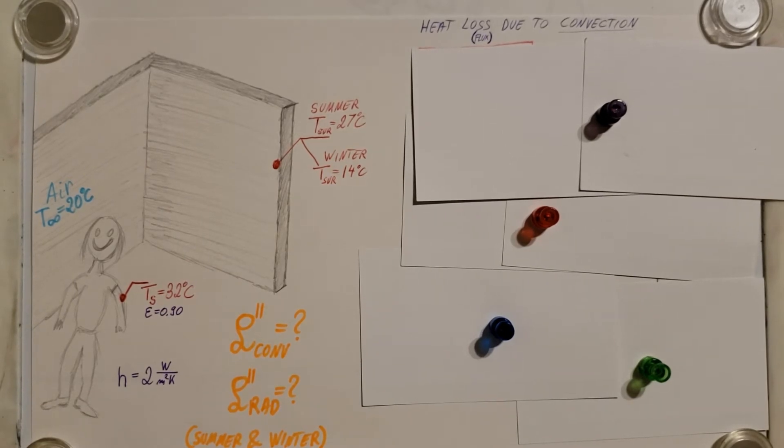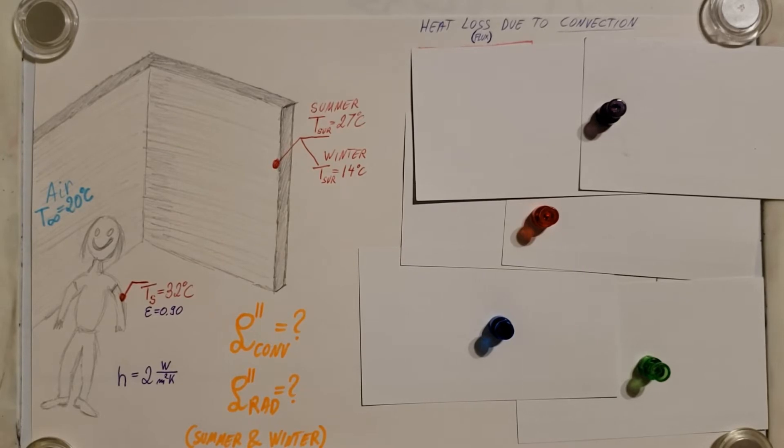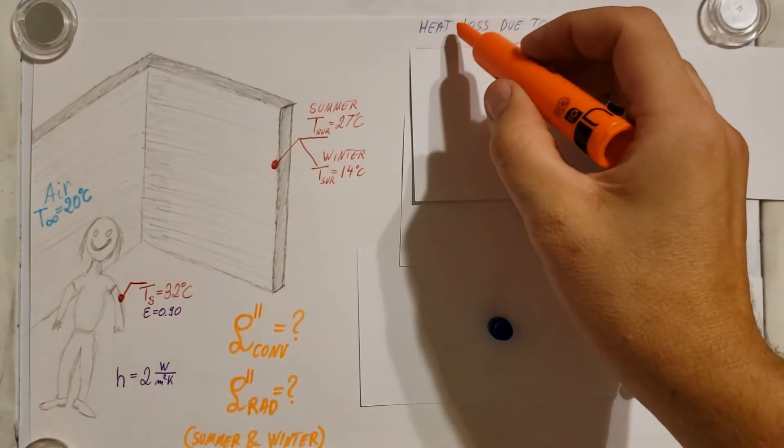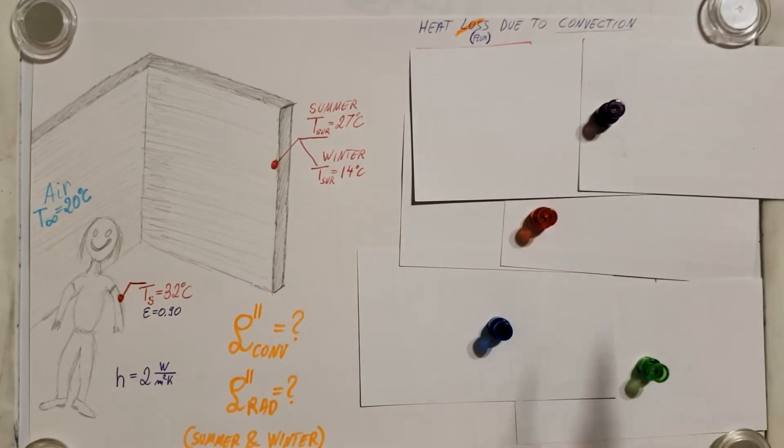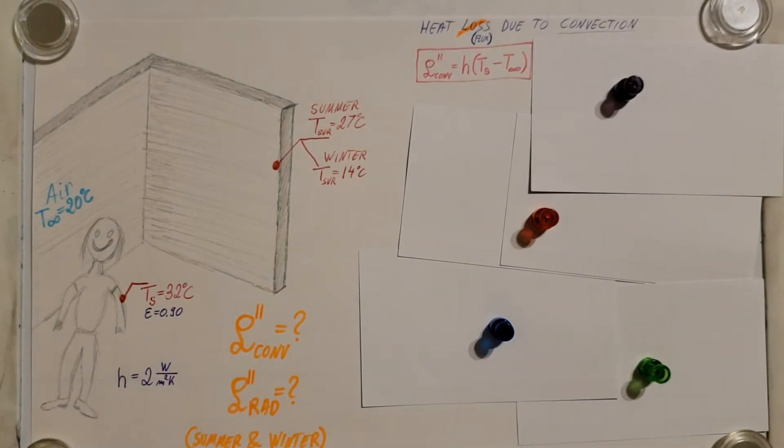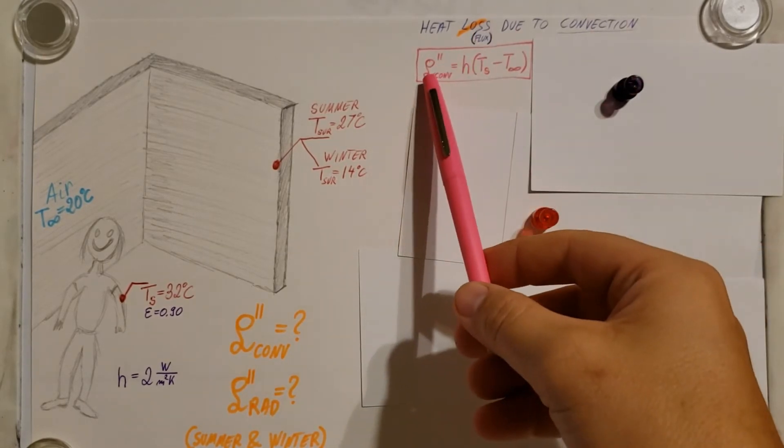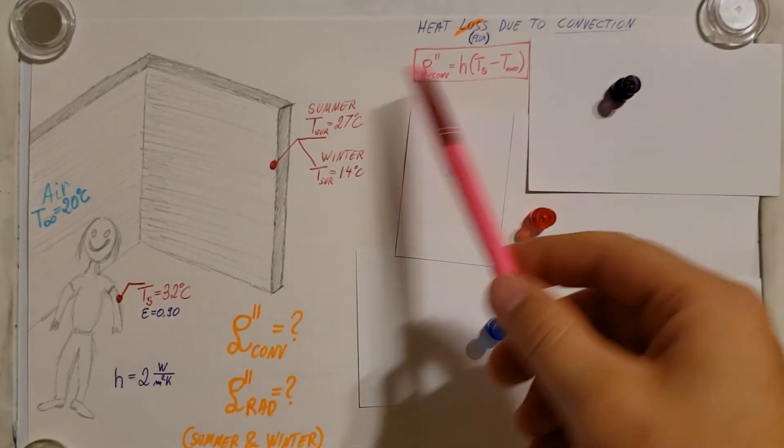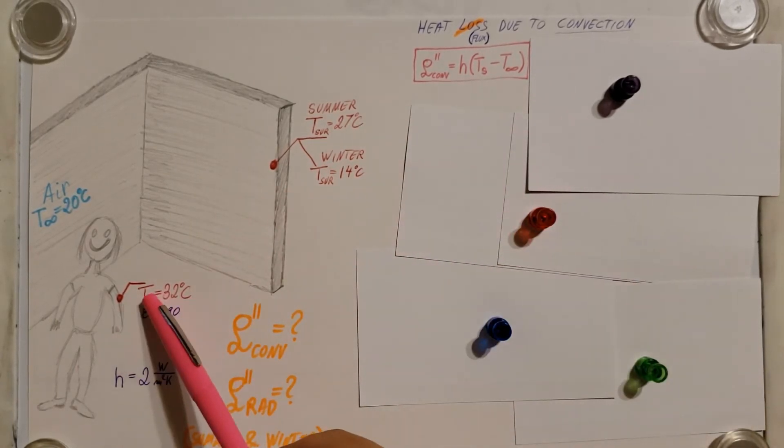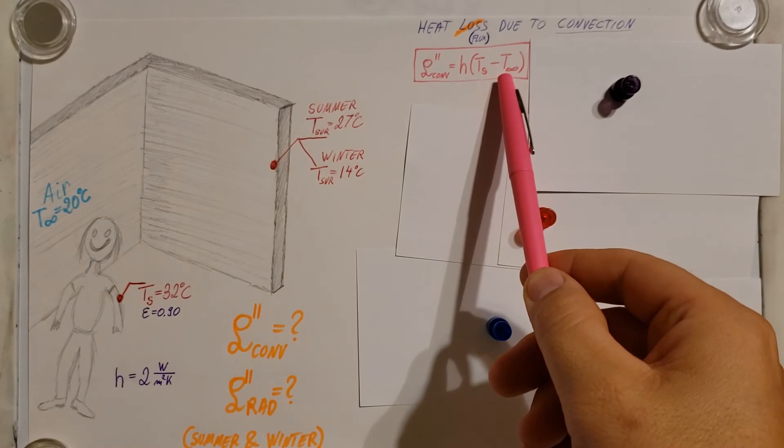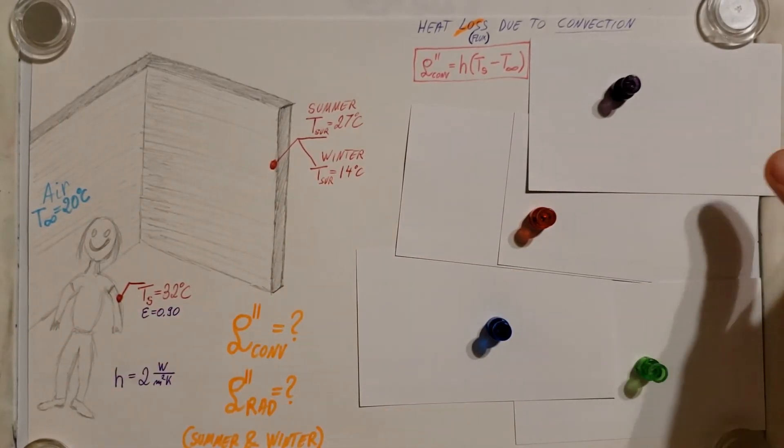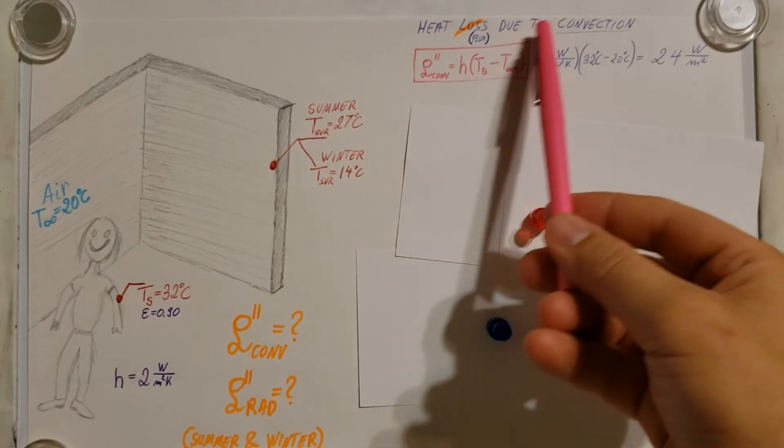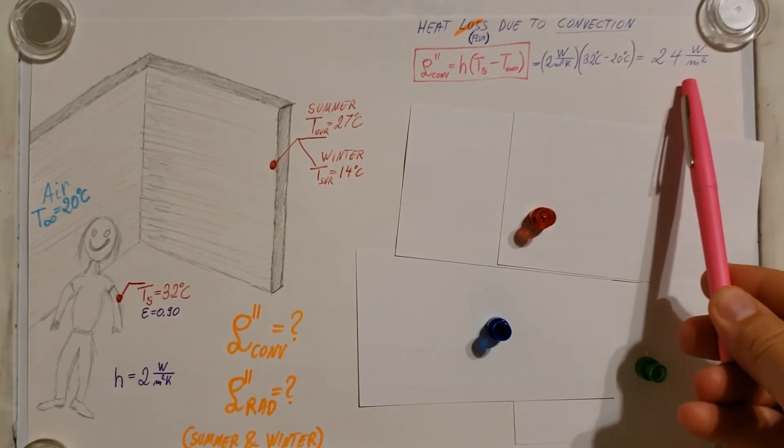So first up, let's take a look at convection and we're going to analyze what kind of heat loss do we have due to convection. But again, we don't have area, so instead of heat loss, heat flux. What kind of heat flux do we have due to convection? Now here's our formula for convection. Flux of convection equals H times TS minus T infinity. Now, the H is given, we can plug it in, TS of the person is 32, and T infinity is our air temperature, 20 degrees Celsius. Now we can go ahead, plug all these in, and we can see that we have a heat flux due to convection of 24 watts per meter square.